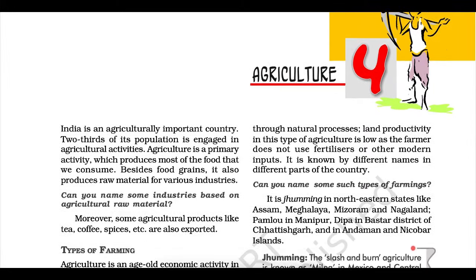Kharif crops are grown with the onset of monsoon in different parts of the country and are harvested in September to October. Important crops grown during this season are paddy, maize, jowar, bajra, toor, moong, urad, cotton, jute, groundnut, and soya bean. Some of the most important rice-growing regions are Assam, West Bengal, coastal regions of Odisha, Andhra Pradesh, Telangana, Tamil Nadu, Kerala, and Maharashtra, particularly the Konkan coast, along with Uttar Pradesh and Bihar. Recently, paddy has also become an important crop of Punjab and Haryana. In states like Assam, West Bengal, and Odisha, three crops of paddy are grown in a year: Aus, Aman, and Boro. In between the Rabi and the Kharif seasons, there is a short season during summer months known as the Zaid season. Some of the crops produced during Zaid are watermelon, muskmelon, cucumber, vegetables, and fodder crops. Sugarcane takes almost a year to grow.